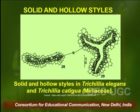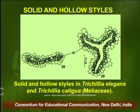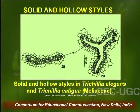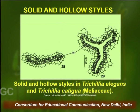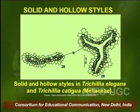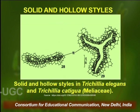This is a picture of a solid and a hollow style in two species of Trichilia: one depicts the solid style on the left-hand side and a hollow style on the right. Both species — Trichilia elegans and Trichilia catigua — belong to the family Meliaceae.